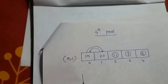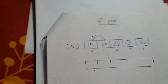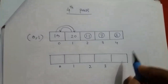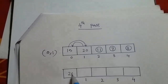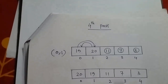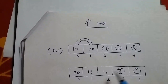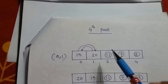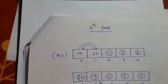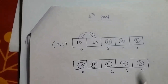Let us draw the resultant array: 20, 19, 11, 7, 3. There are no other comparisons left. 3, 7, and 11 were already fixed just before the start of the fourth pass, and 19 and 20 are also fixed after the end of the fourth pass. So the total process is now completed.